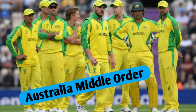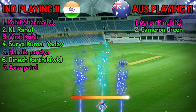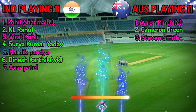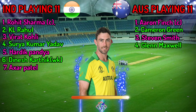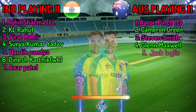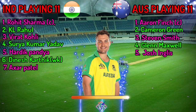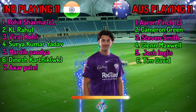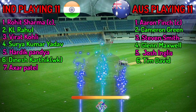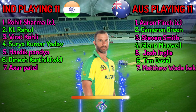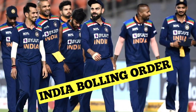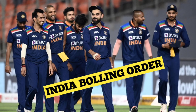Australia team middle order: Number 3, Steve Smith, right-handed batsman. Number 4, Glenn Maxwell, right-handed batsman. Number 5, Josh Inglis, all-rounder. Number 6, Tim David, right-handed batsman. Number 7, Matthew Wade, wicket-keeper batsman.